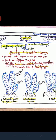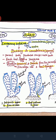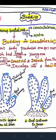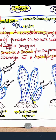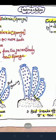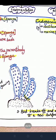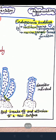Budding in Leucosolenia: the parent individual produces one or more outgrowths at the base — that is bud formation. The young bud starts to grow and constricts, and at last it begins to detach from the parental body.